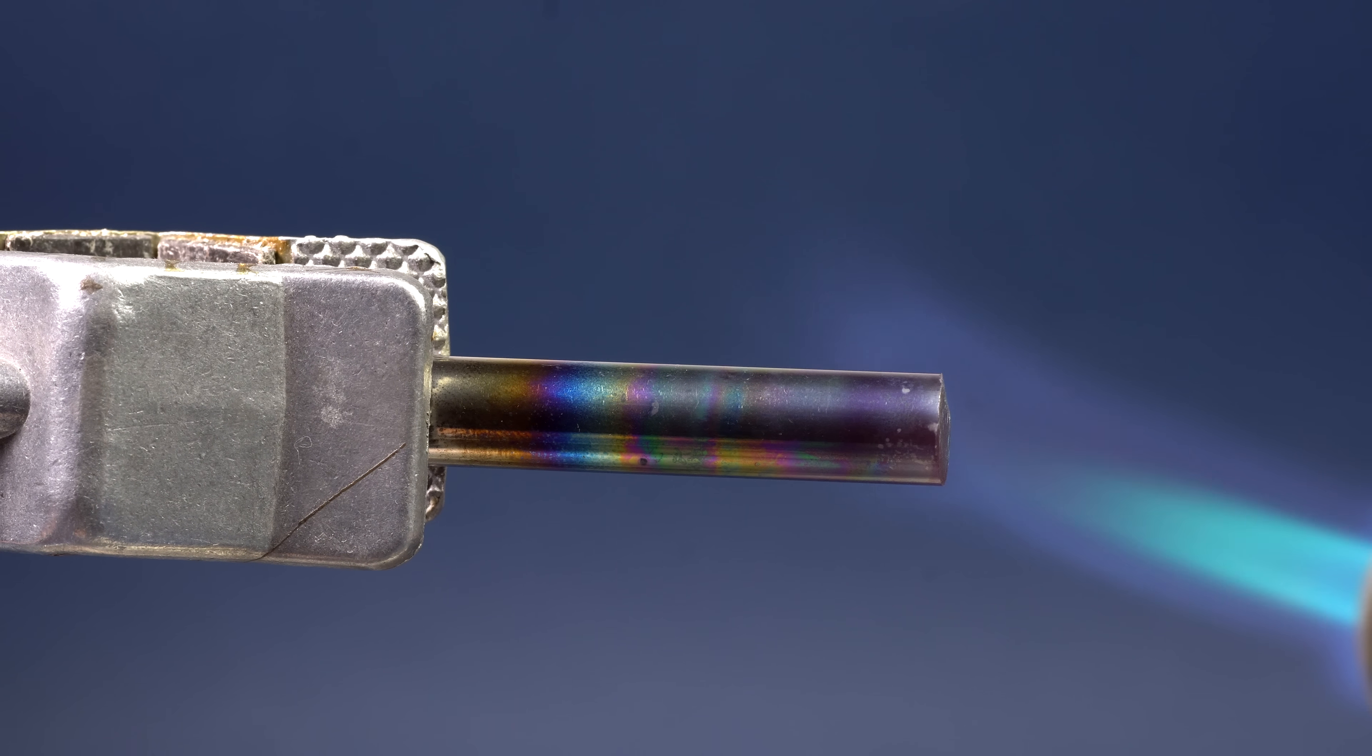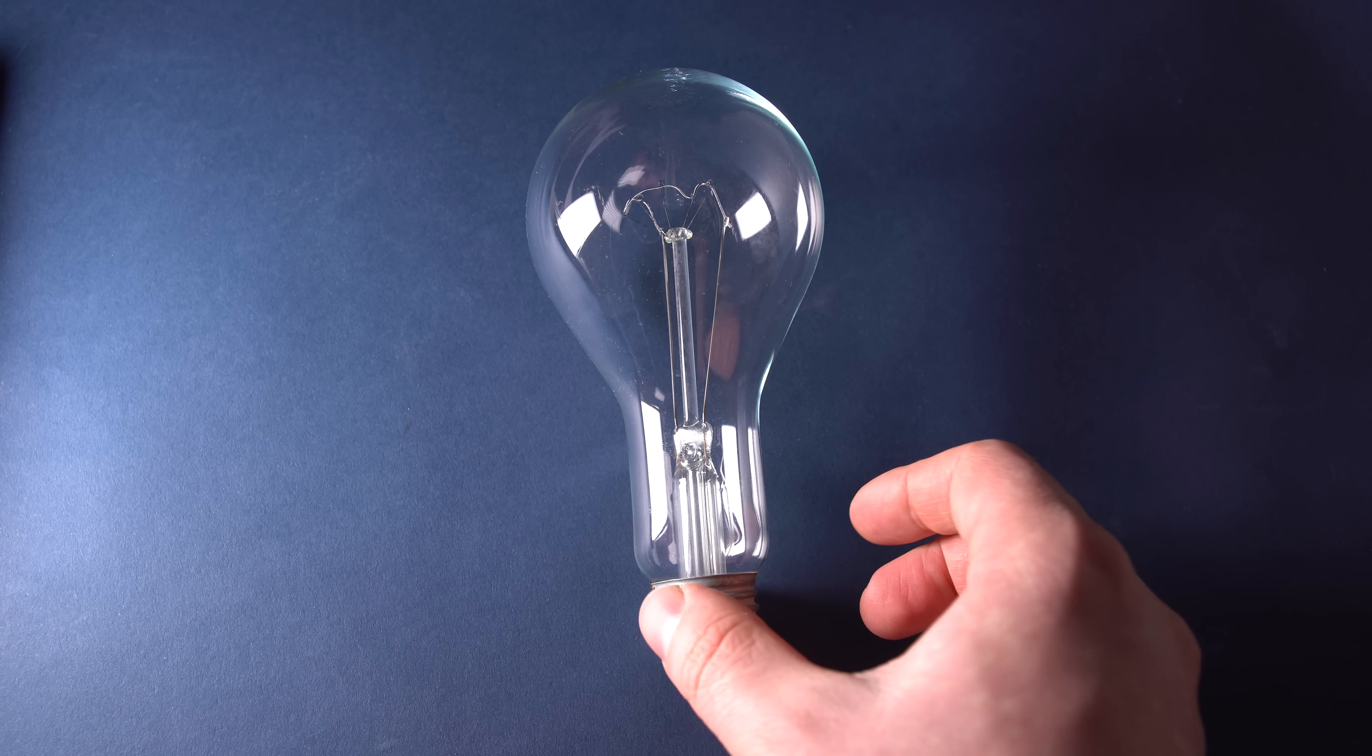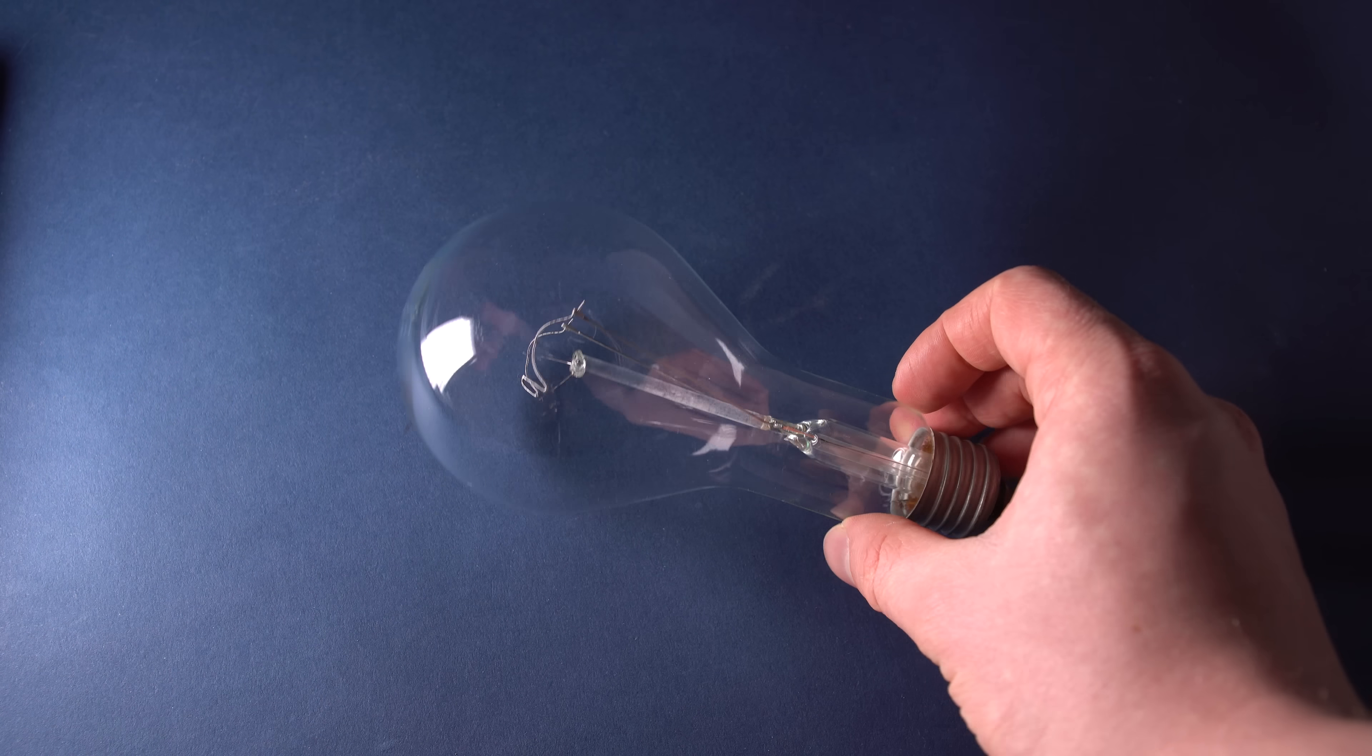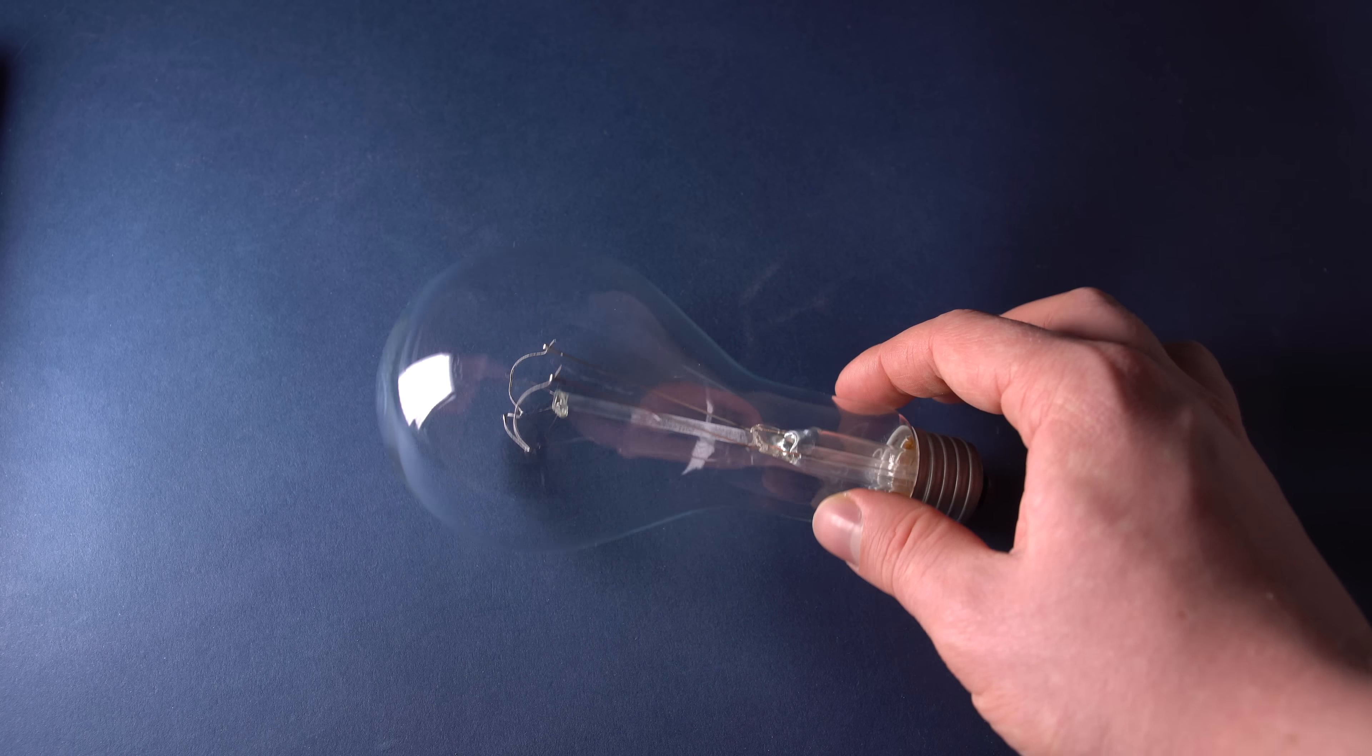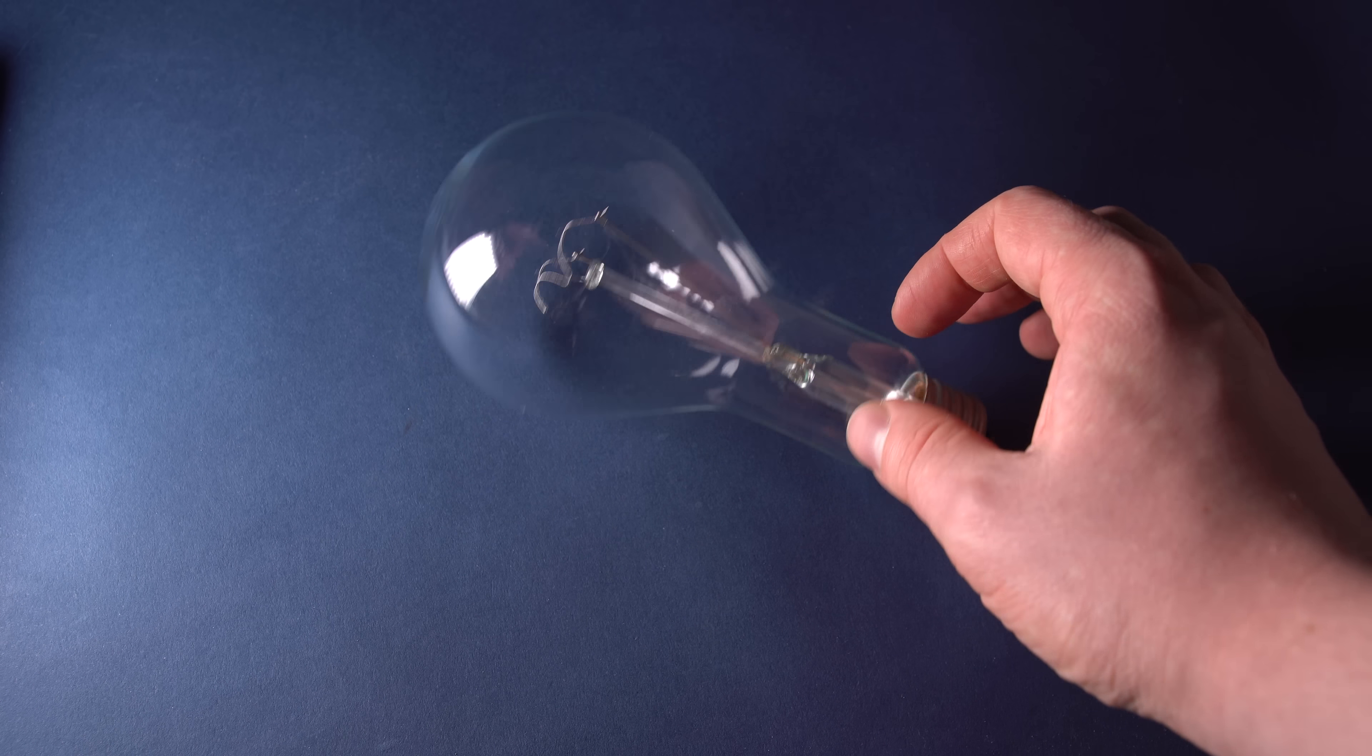However, in the light bulbs, it's not really about the beauty, more about the ability to actually produce light. Hence, all the oxygen from the bulb is pumped out and is replaced with a mixture of nitrogen and argon under reduced pressure.